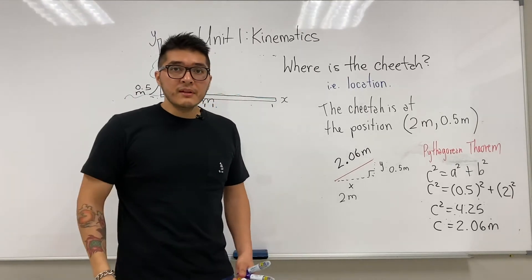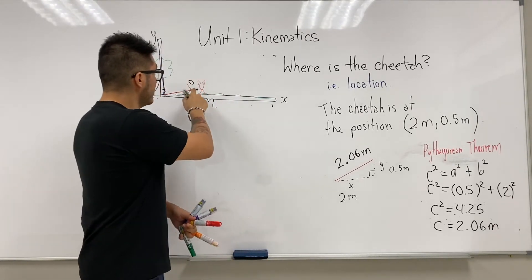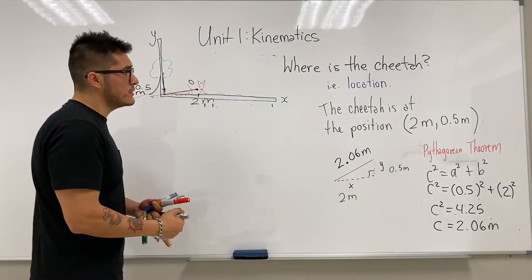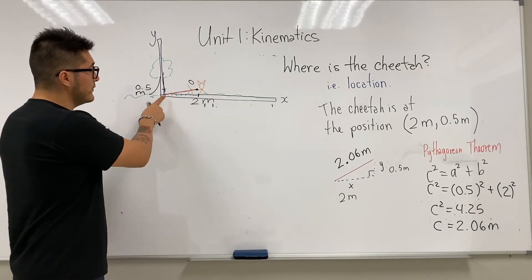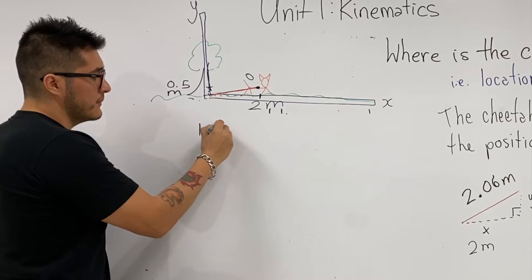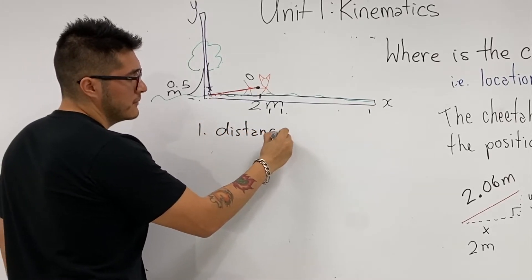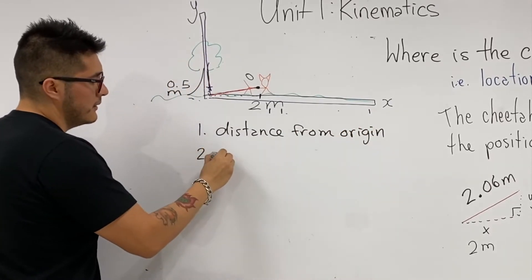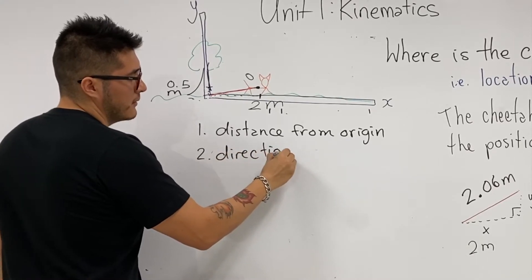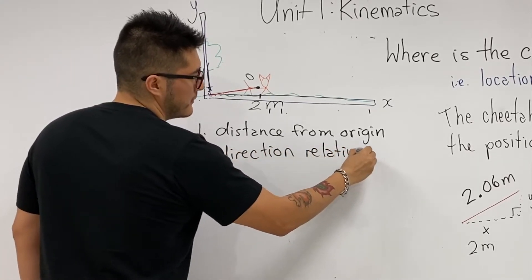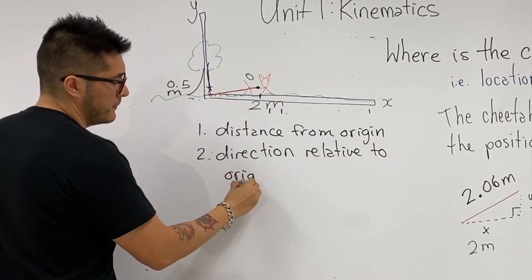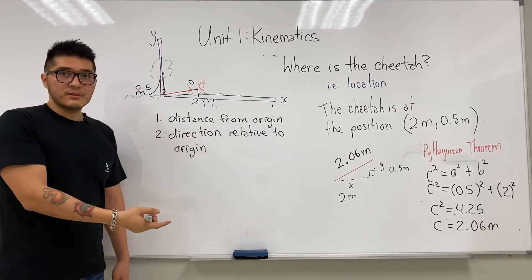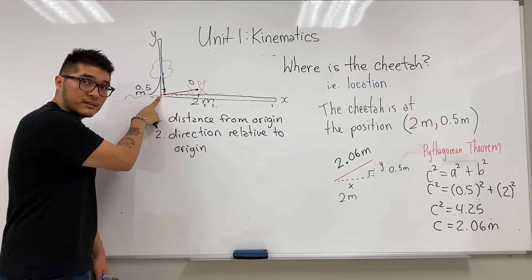To fully describe where the cheetah is at time zero, we need to specify how far away it is, but we must also say in what direction relative to the origin — so two things: distance from origin and direction relative to origin. The key point is that you have to choose your coordinate system wisely, most conveniently placing it at the ground.